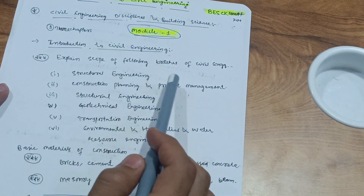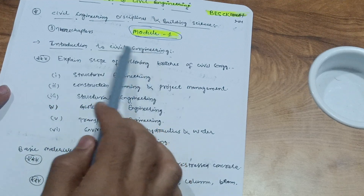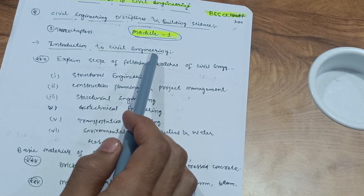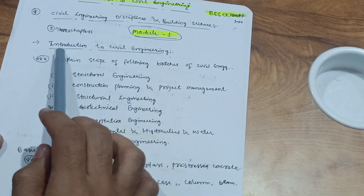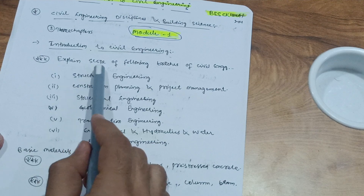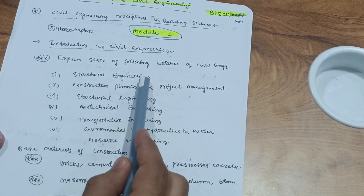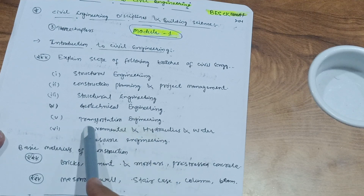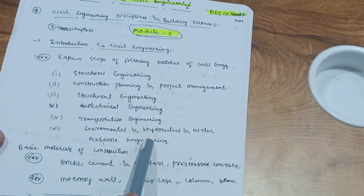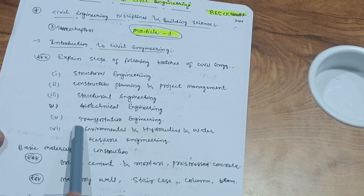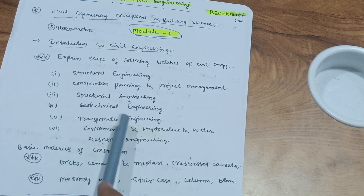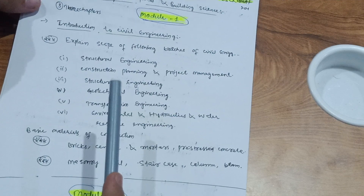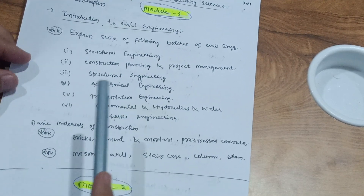Introduction to Civil Engineering is the theory part here. Module 1 contains three chapters — in the 2018 scheme it had only two chapters, so they added one more. You have to focus on explaining the scope of the following branches of civil engineering: structural engineering, construction planning and project management, geotechnical engineering, transportation engineering, environmental engineering, and hydraulics and water resource engineering. These six branches are a definite question — they will ask two of them for 10 marks. Don't leave anything from this module as it is the passing module.